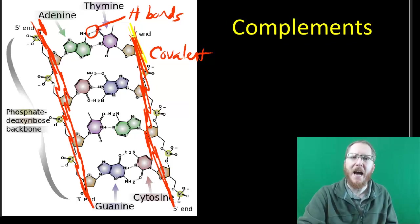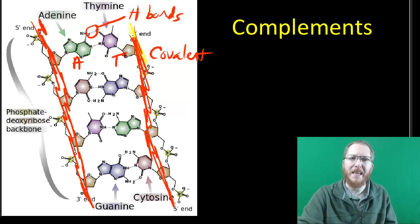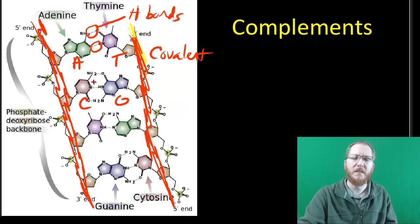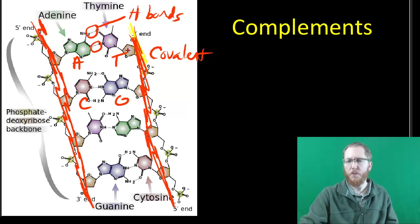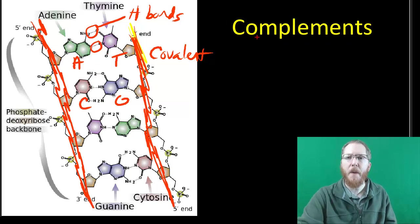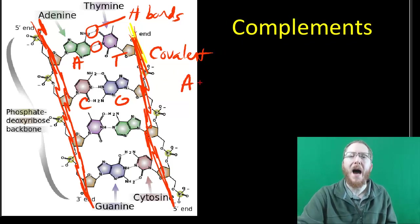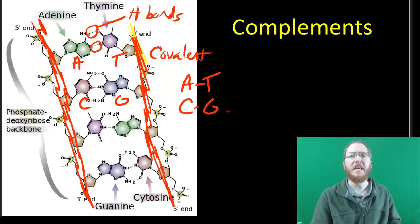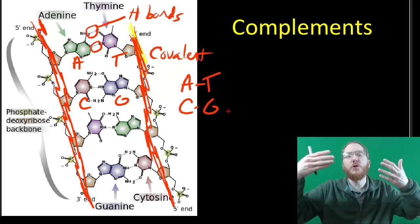You'll also notice that these hydrogen bonds are different. Adenine and thymine form two hydrogen bonds, and the direction of those hydrogen bonds are different than that between cytosine and guanine. This is critical because there's a complementary pair. Adenine, just like Chargaff figured out, wants to hydrogen bond with thymine. They want to pair up.